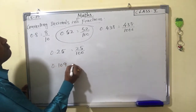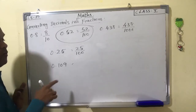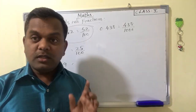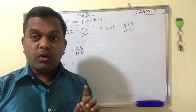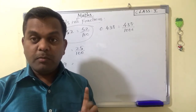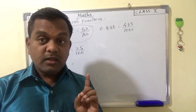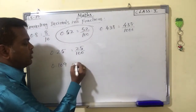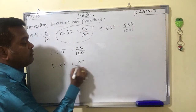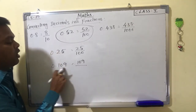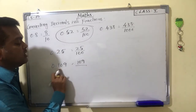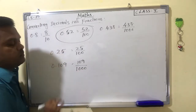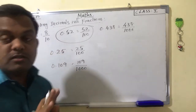One more example: 0.109. Our first step is to write the decimal number without the decimal point as the numerator — that is 109. After the point there are 3 places, so we write 1 and 3 zeros — that is 1000. So 0.109 equals 109 by 1000.